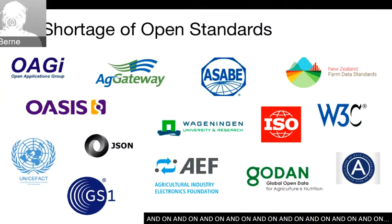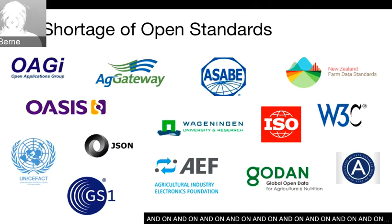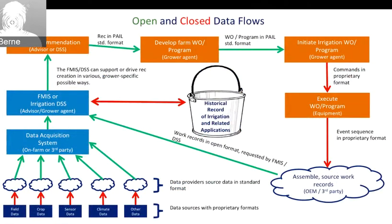Standards groups include Open Ag Applications Group, ISO, GODAN, AEF — which deals more with tractors and actual equipment — and many more. We've gone through the cycle of saying if only we had one standard to make them all comply, one big umbrella standard — and what happens? It just becomes another standard. The industry is trying not to duplicate where it can. The first philosophy at Ag Gateway in the U.S. is: don't duplicate a standard that's already out there. Just promote it and make it easy for farmers to use and share data.